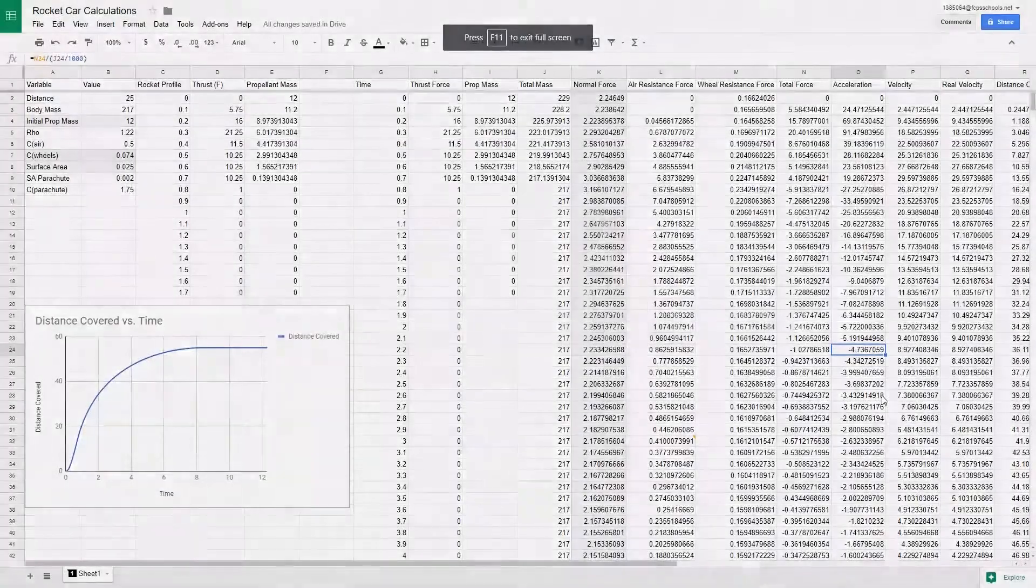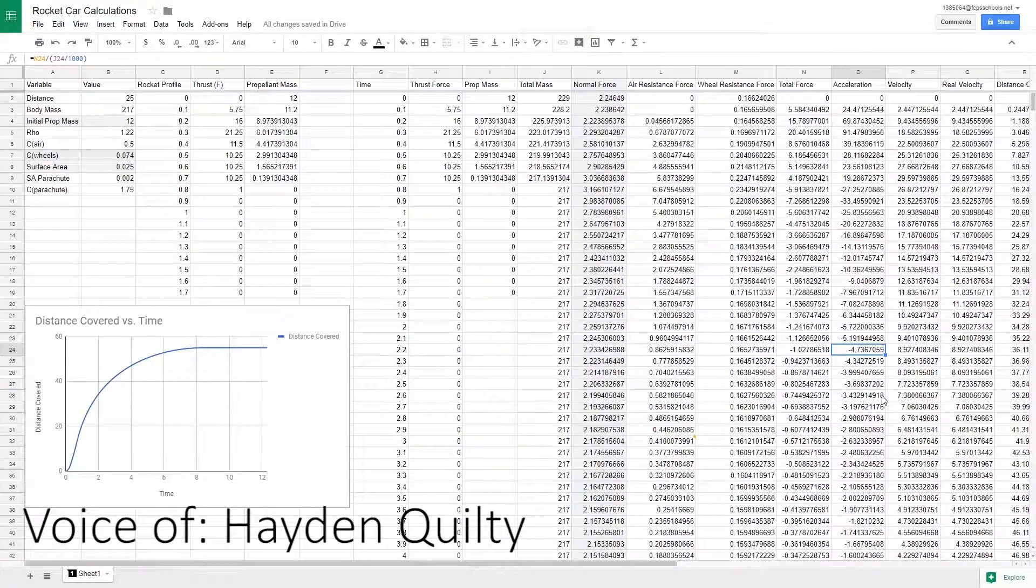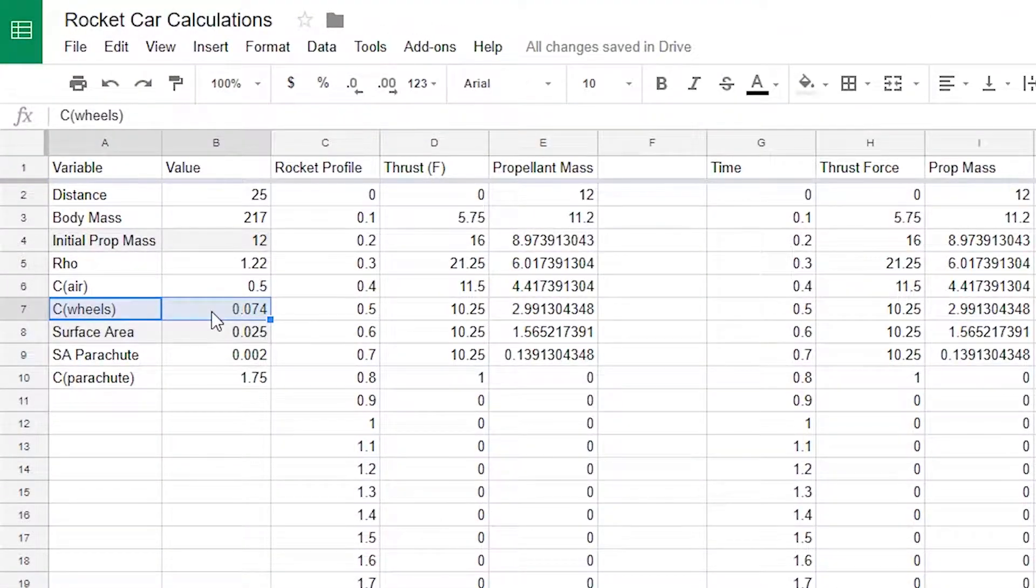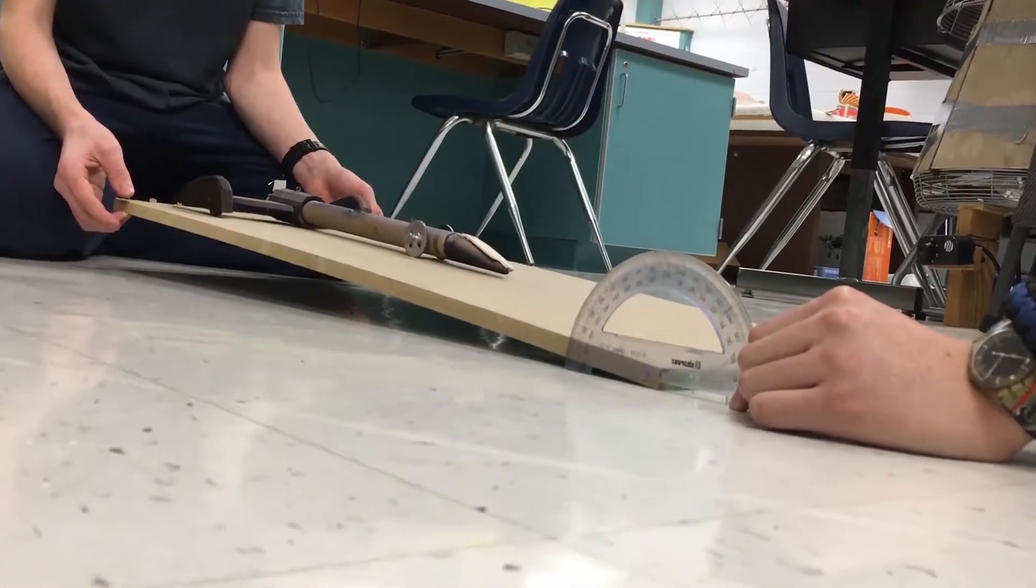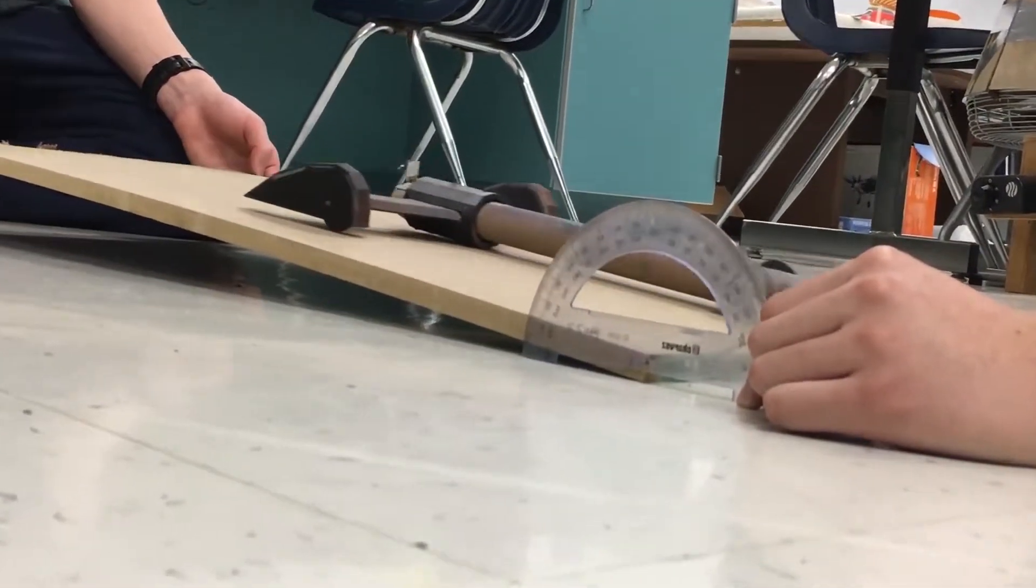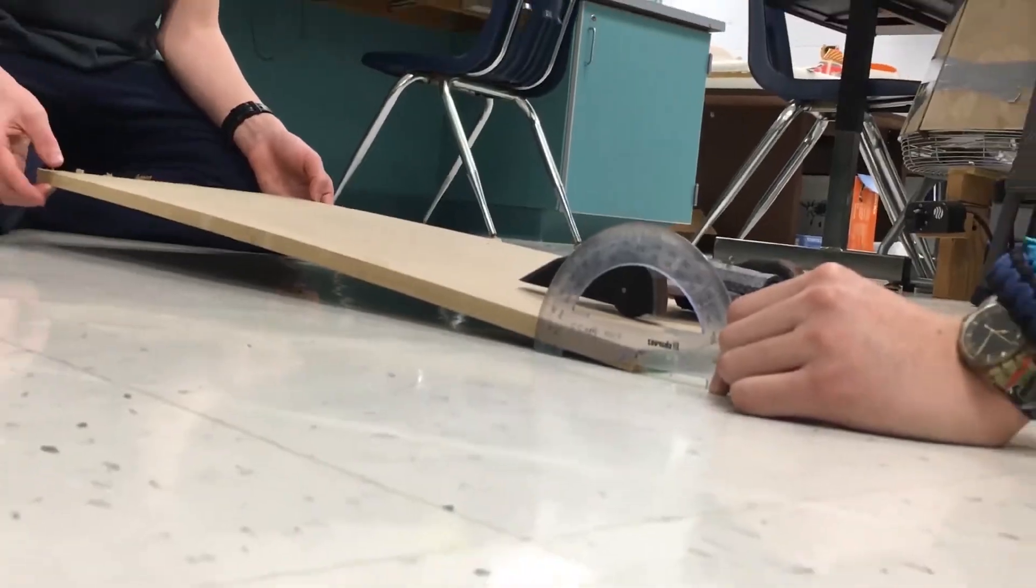We used Google Spreadsheets to determine how long it would take our rocket cars to cross the finish line. We had to account for a number of variables, but most importantly we accounted for the coefficient of rolling friction, which we determined by inclinating our rocket cars until they eventually started moving and finding the tan of that angle.